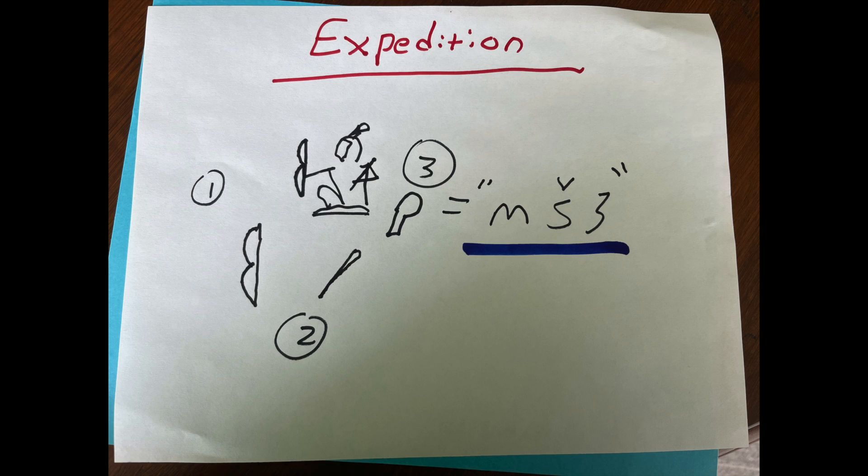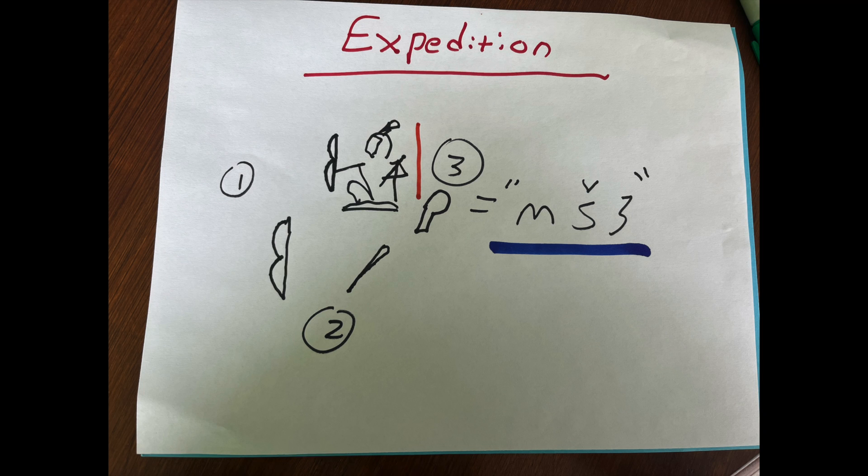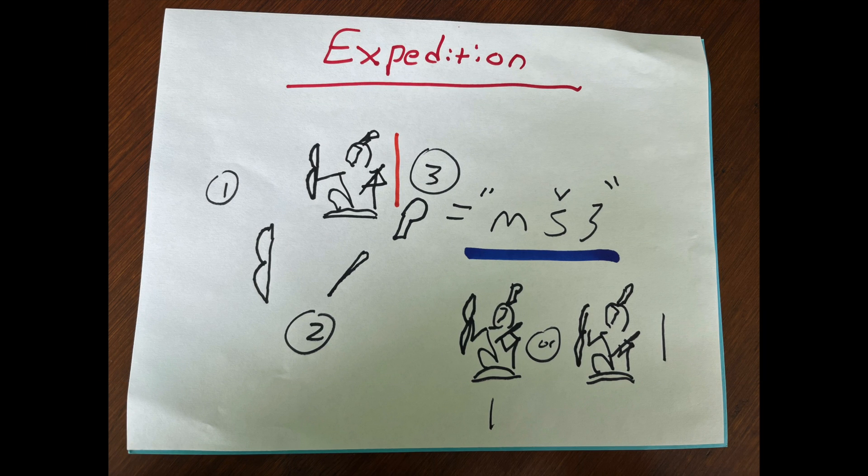Alright. This is pronounced mishah. The S with the little V over it, remember, is an SH sound. So, mishah would be expedition. And of course, don't forget, in order to make sure that this is being read as an ideogram, you have to have the stroke line. And the stroke line can be both below or to the right. Well, I guess more to the left if you're reading the other direction.